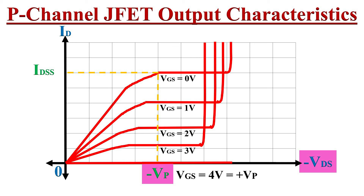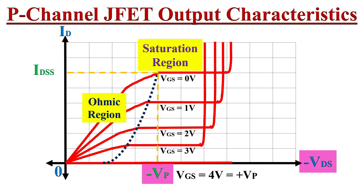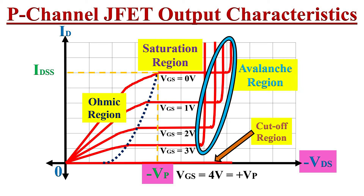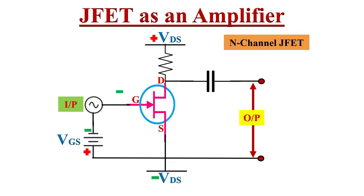The ID versus VDS output characteristic curve of the P-channel JFET looks quite similar to the N-channel JFET, but in this case the horizontal axis shows minus VDS (negative) and the gate to source voltage VGS is positive. Like the N-channel JFET, the P-channel JFET also operates in four different regions: ohmic region, saturation region, cutoff region, and avalanche breakdown region.